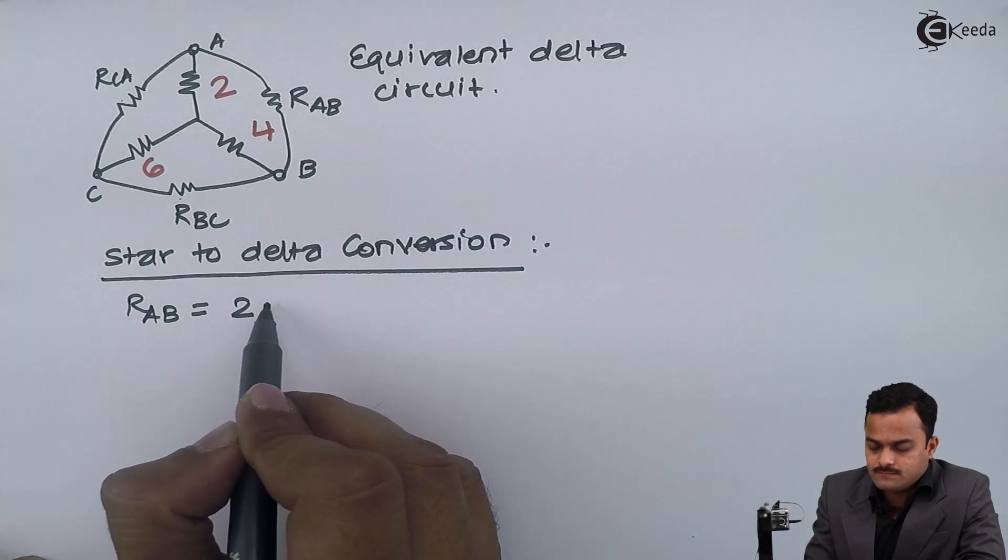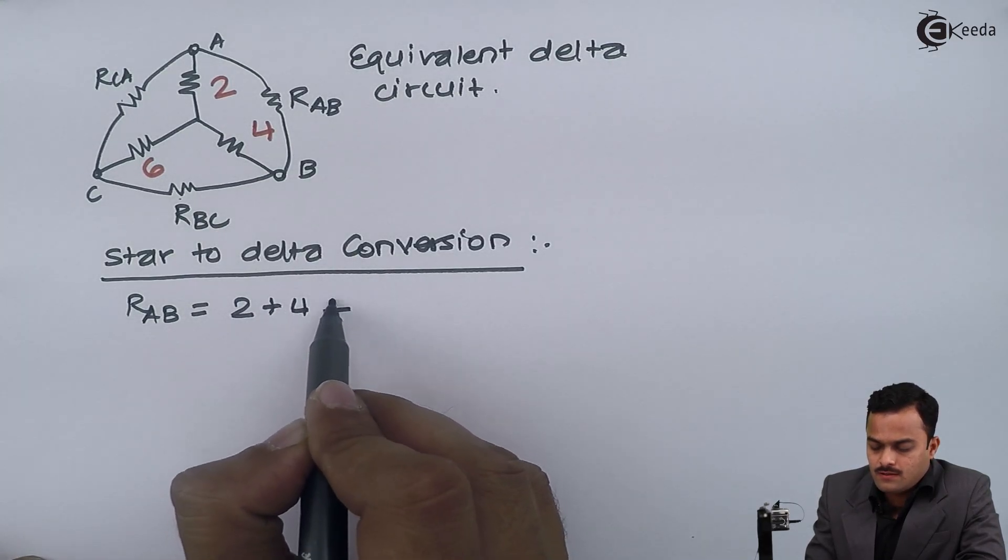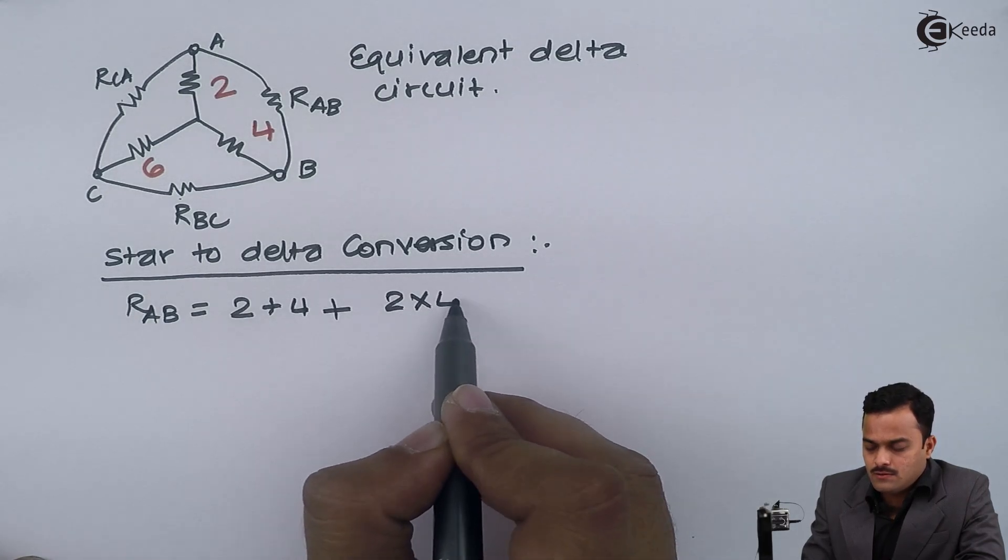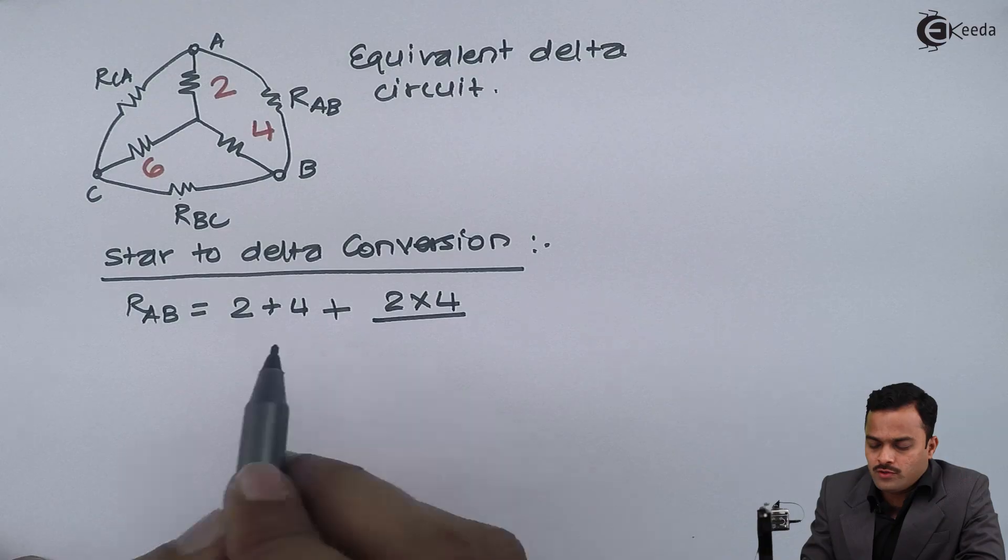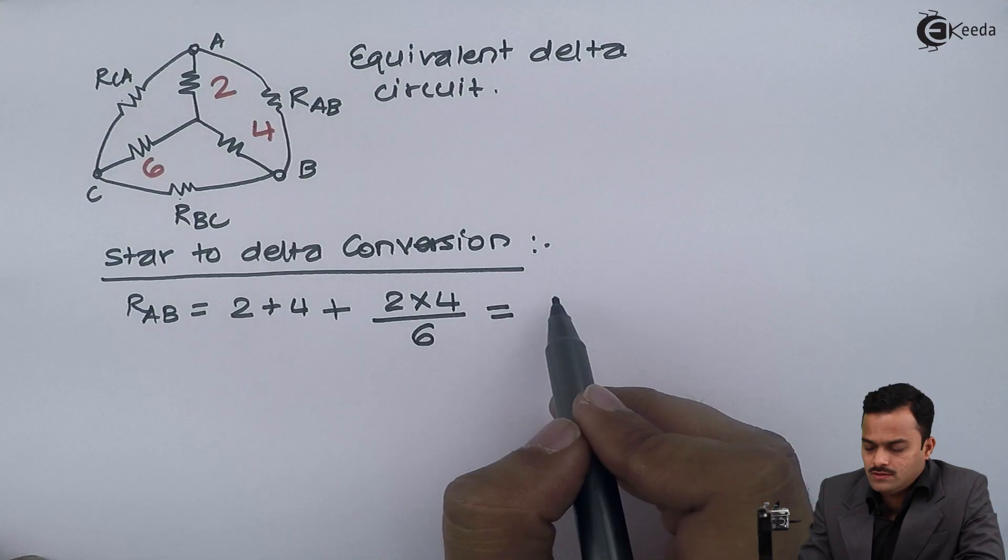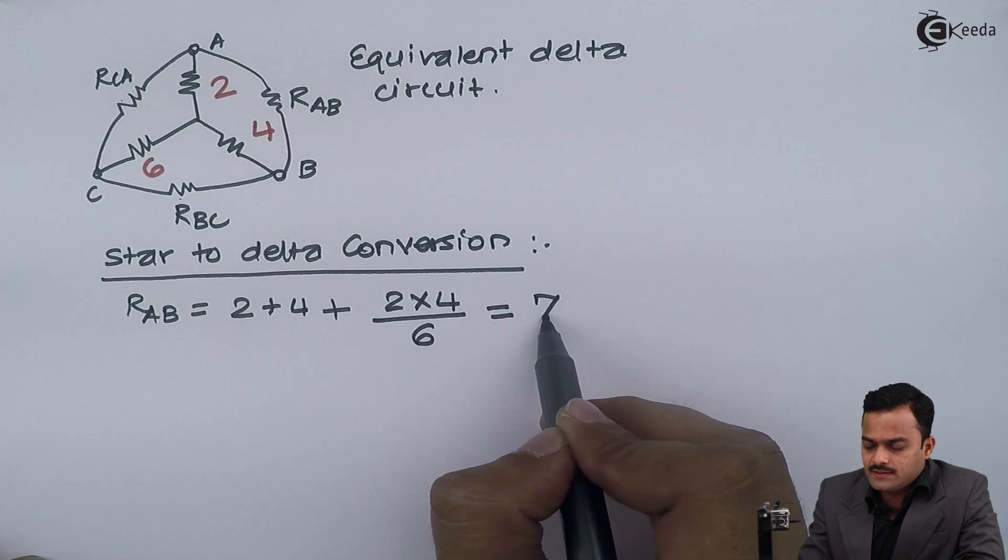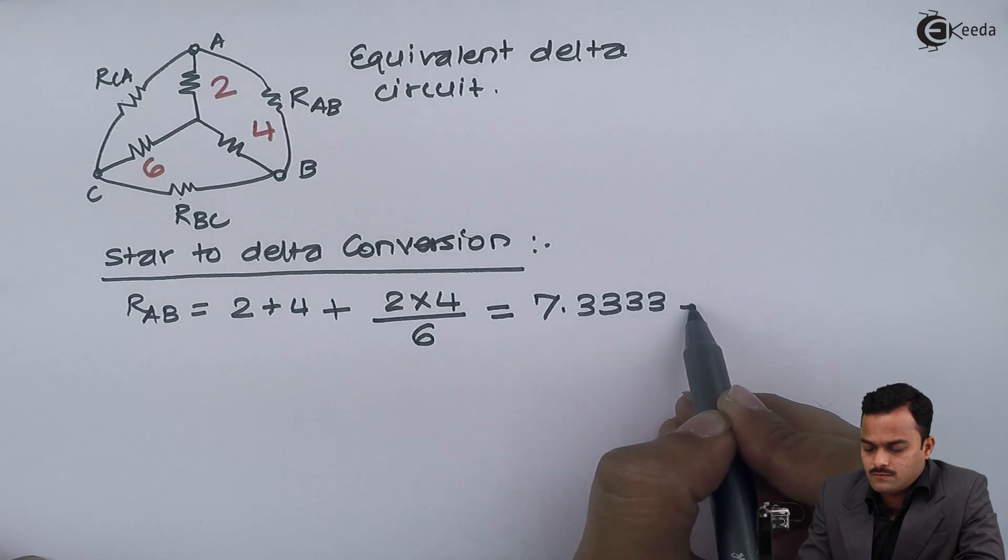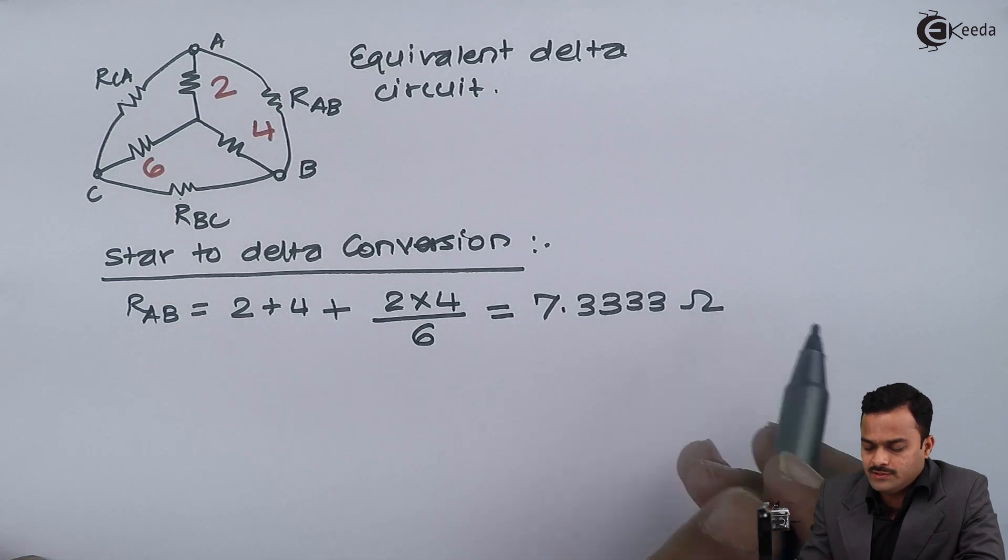RAB is given as 2 plus 4 plus 2 into 4 divided by third resistor which is 6 ohm. After solving I will get an answer 7.3333 ohm.